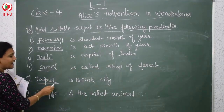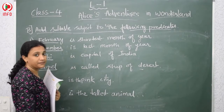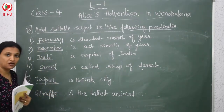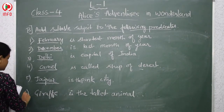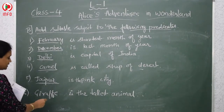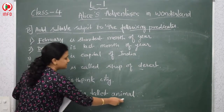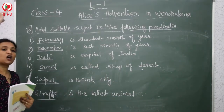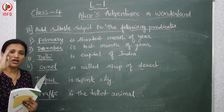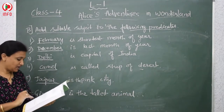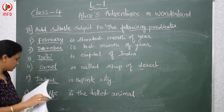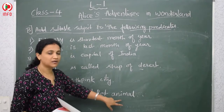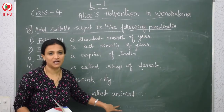The fifth one is: dash is the pink city of India. Jaipur is called the pink city of India. The sixth one is: dash is the tallest animal — Giraffe. The giraffe has a long neck and it is the tallest animal in the world.